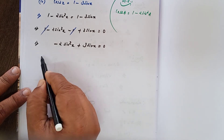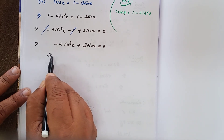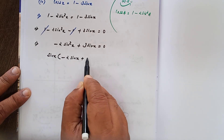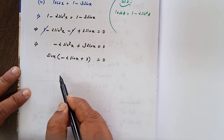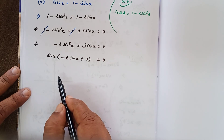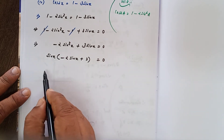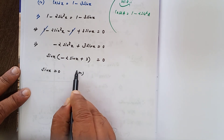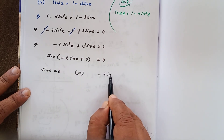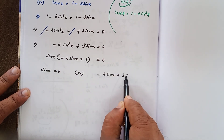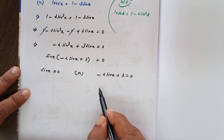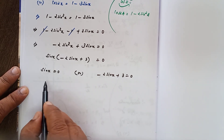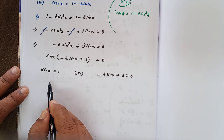Taking sinx as common: sinx(minus 2sinx plus 3) equals 0. Therefore sinx equals 0 or minus 2sinx plus 3 equals 0.